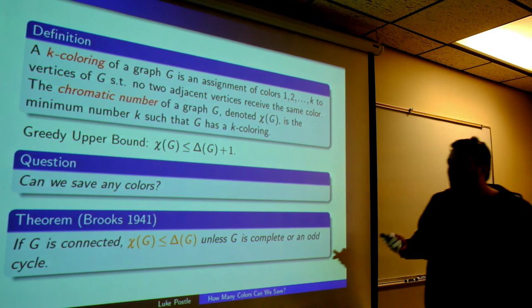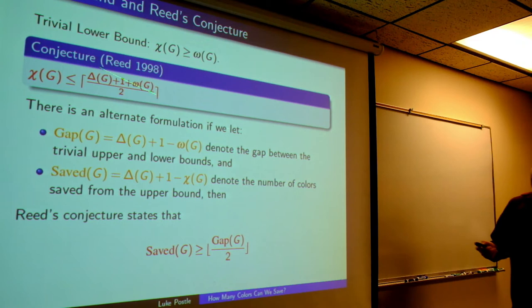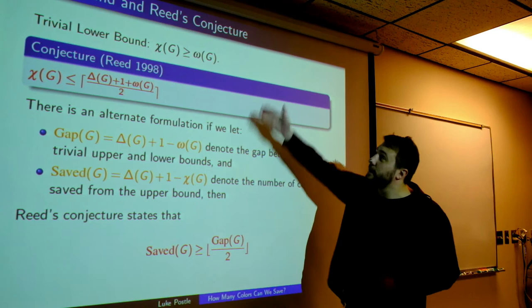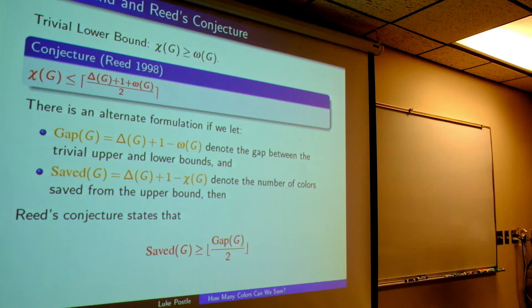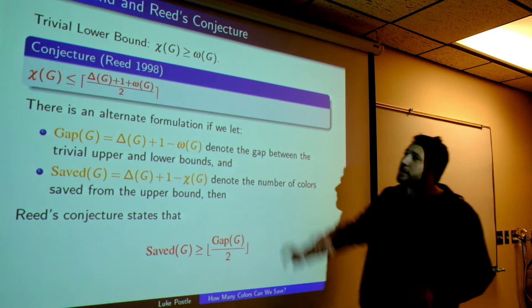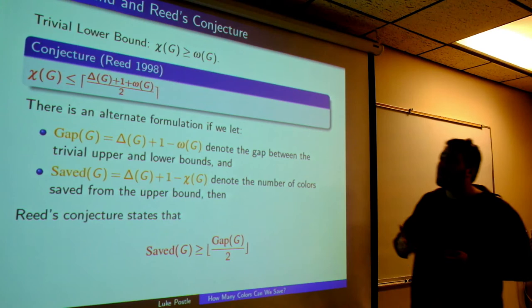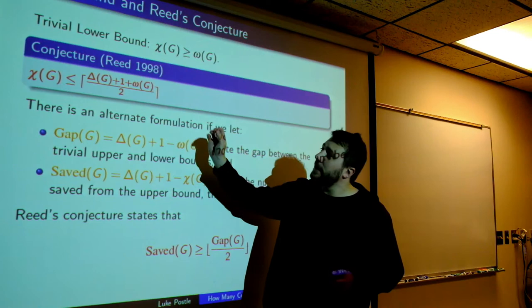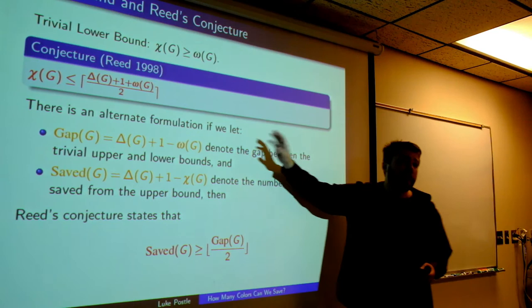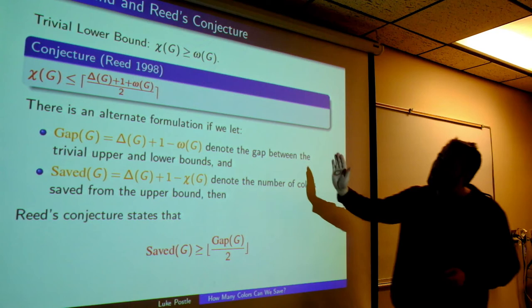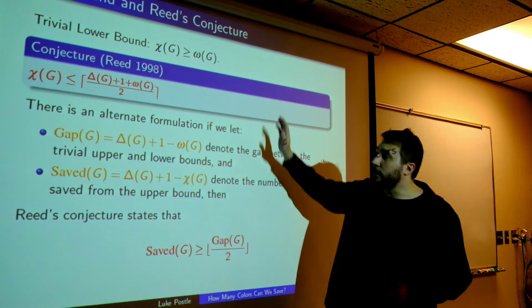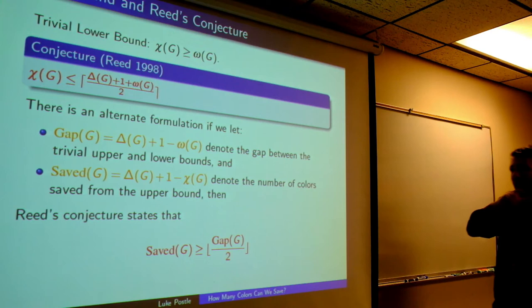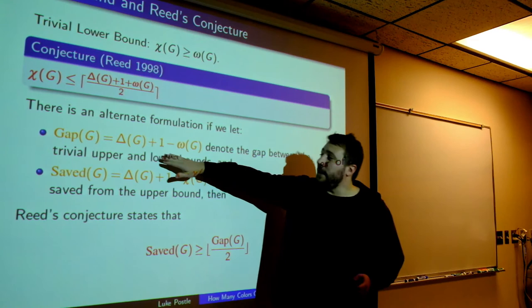This sets us up for a very nice conjecture in graph theory. How much can we try to save? There's a trivial lower bound — the clique number omega. If I have a complete subgraph, I need that many colors just to color it. So we have a trivial lower and upper bound. There's a really pretty conjecture from Reed from 1998: the chromatic number is at most the ceiling of (delta plus 1 plus omega) over 2. Let's define the gap as delta plus 1 minus omega — the gap between the trivial upper and lower bounds.